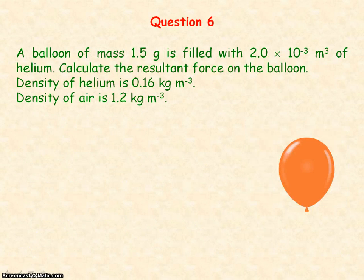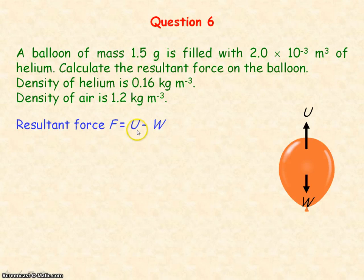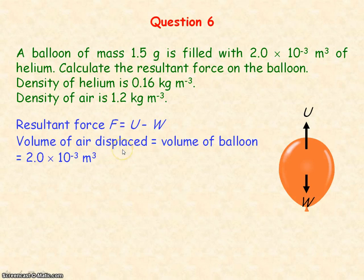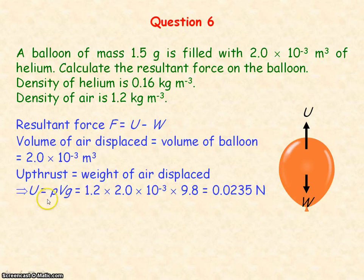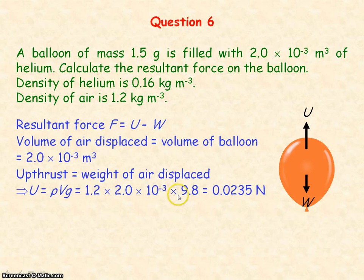For question 6, to determine the resultant force on the balloon, it is equal to its upthrust minus its weight. The volume of air displaced by the balloon equals the volume of the balloon. The upthrust, which equals the weight of the air displaced, equals the density of the air multiplied by the volume of the air displaced — which is the volume of the balloon — multiplied by g, giving an upthrust of 0.0235 newtons.